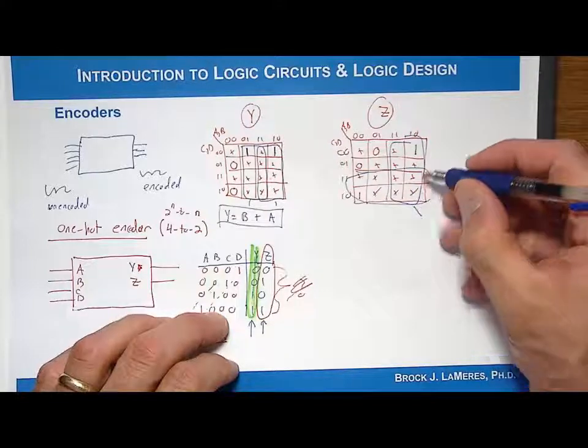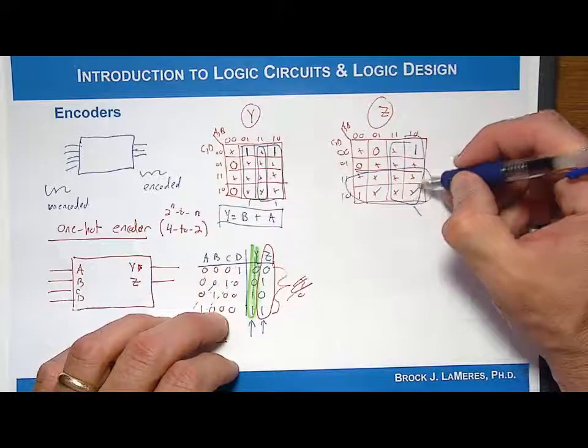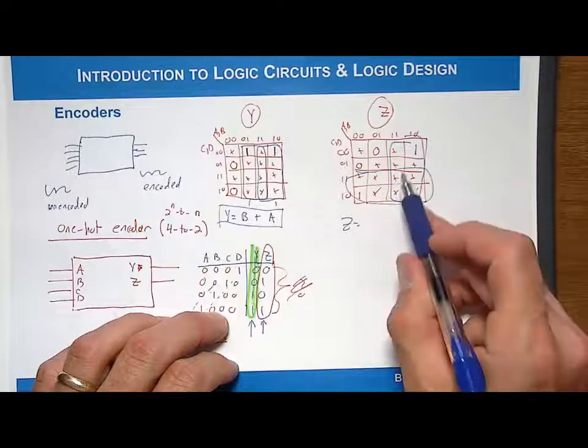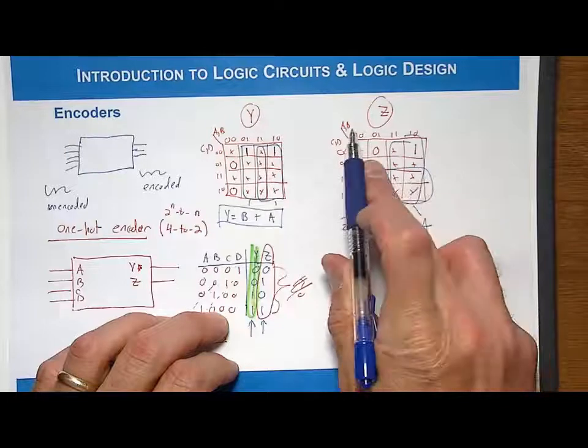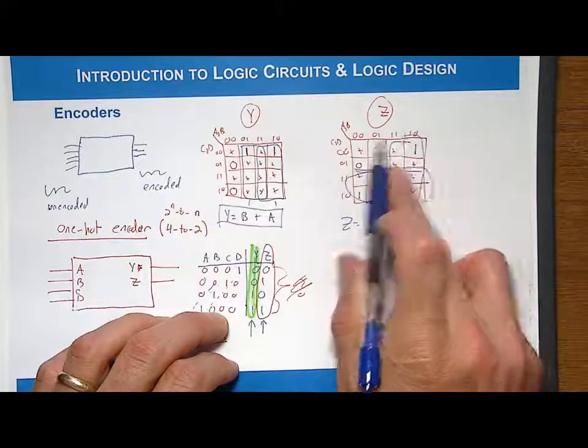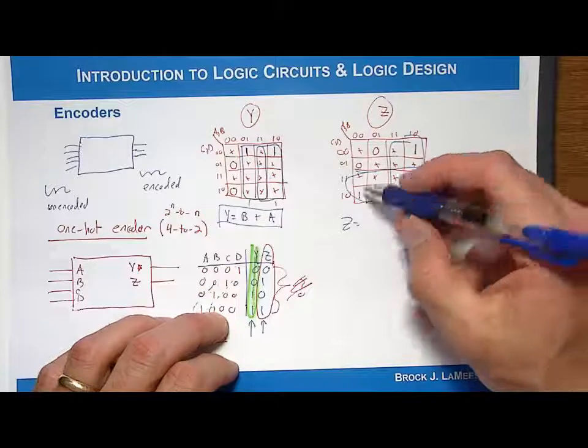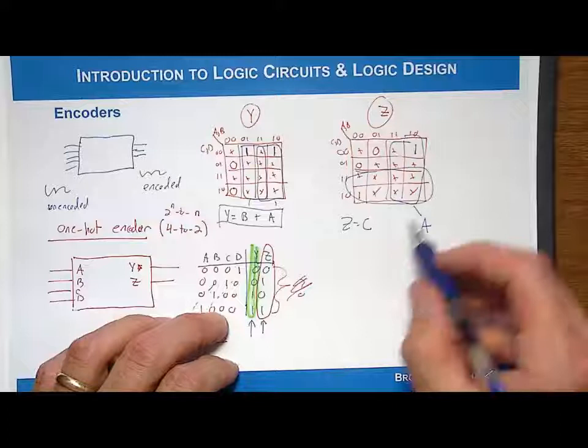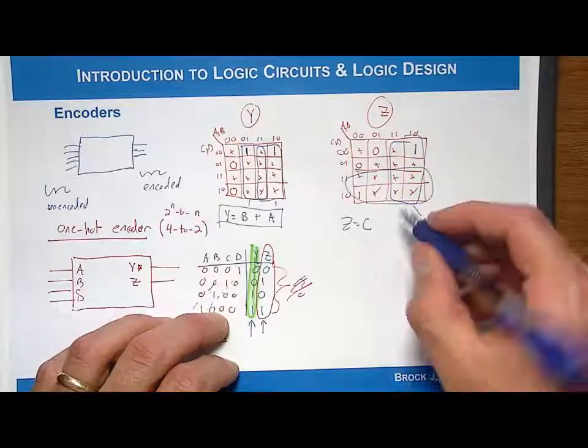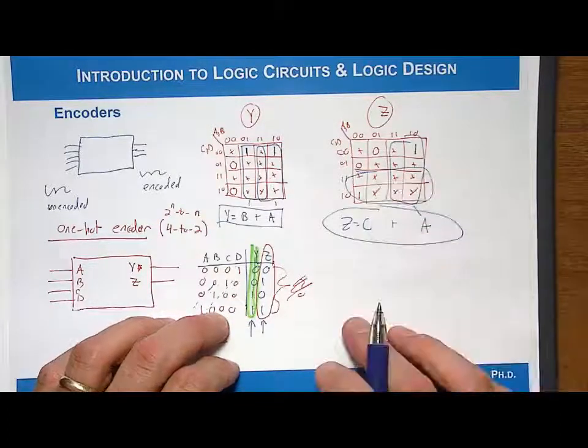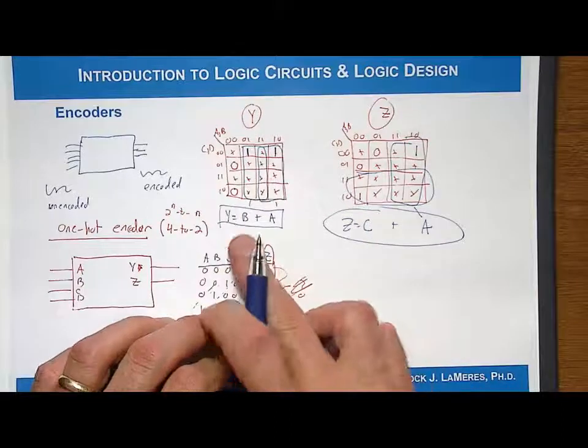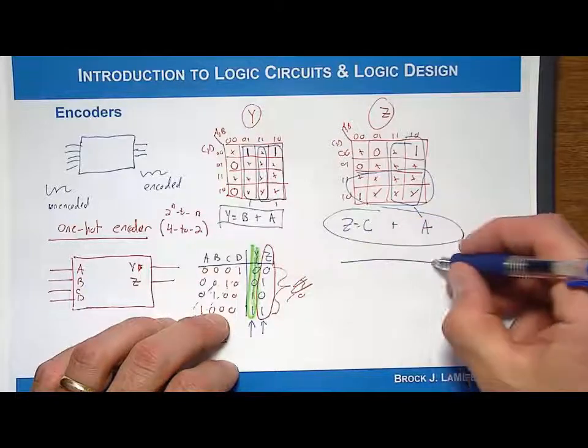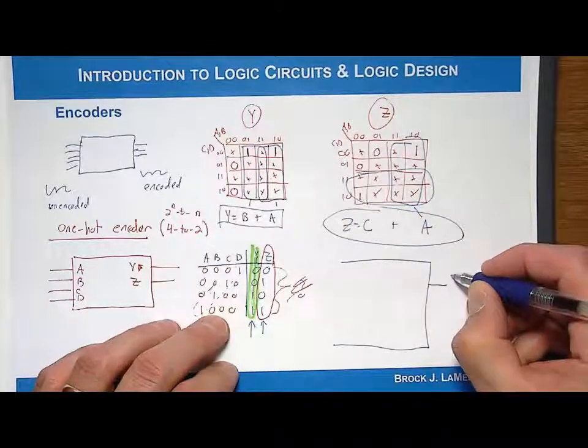We already figured out that this prime implicant for these eight cells is equal to A. Now we say, what is the prime implicant for these bottom eight cells? The circle covers a region where A and B are both 0s and 1s, so they're gone. The circle covers where C is a 1, so it's included. And D is 1 and 0, so it's gone. So our logic expression is C ORed with A. Now I have my two logic expressions: Y equals B ORed with A, Z equals C ORed with A.